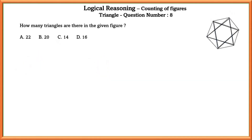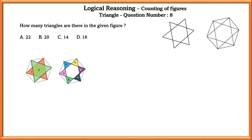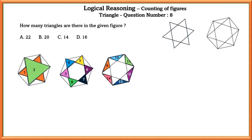Question number eight: how many triangles are there in the given figure? In a star figure, we can get a total of eight triangles. Outside the star we get six more, so 8 plus 6 equals 14 triangles.